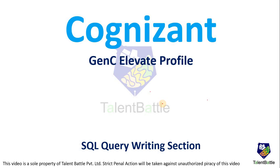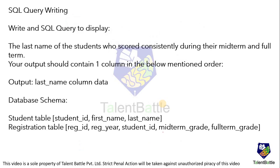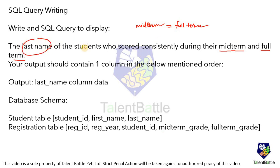Let us see the question first. Write an SQL query to display the last names of students who scored consistently during their midterm and full term examinations. We have to map the data where the condition is midterm equals full term. The output should be in the format of only the last name column — you just need to display the last name, not all records.